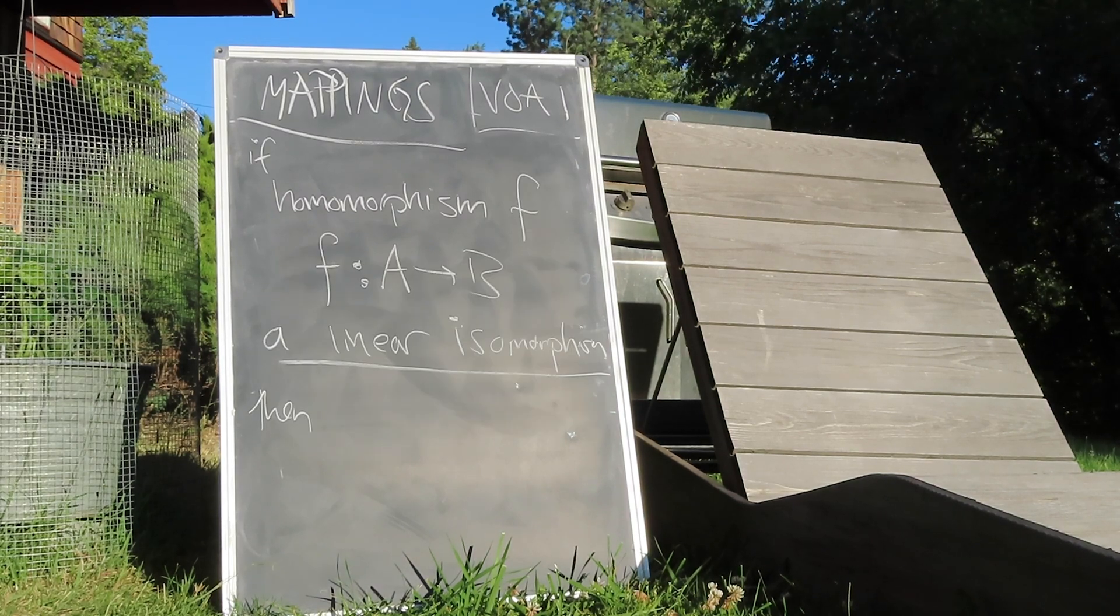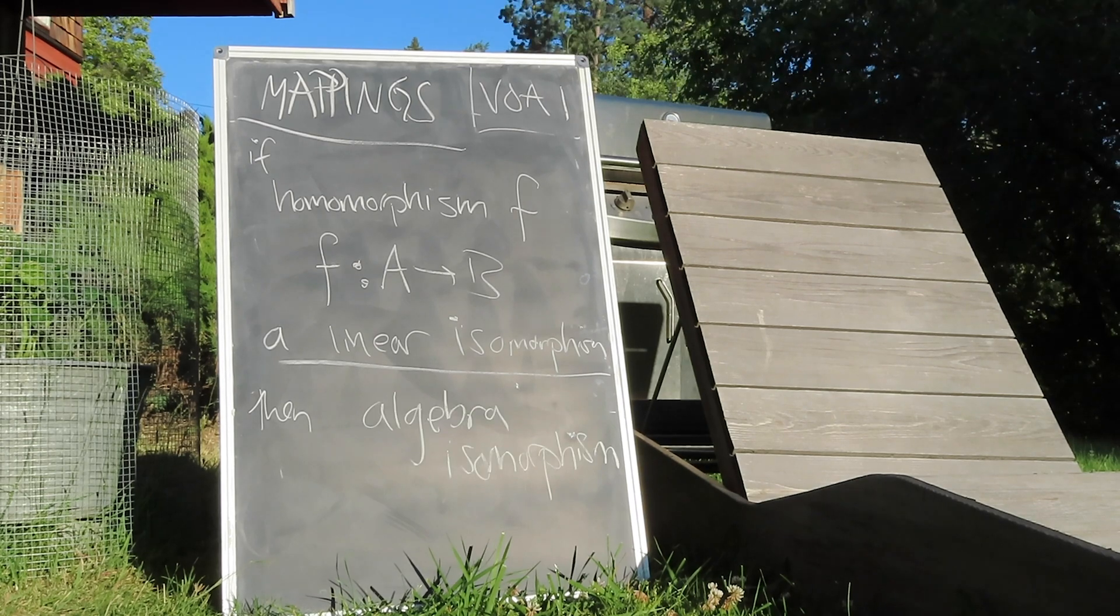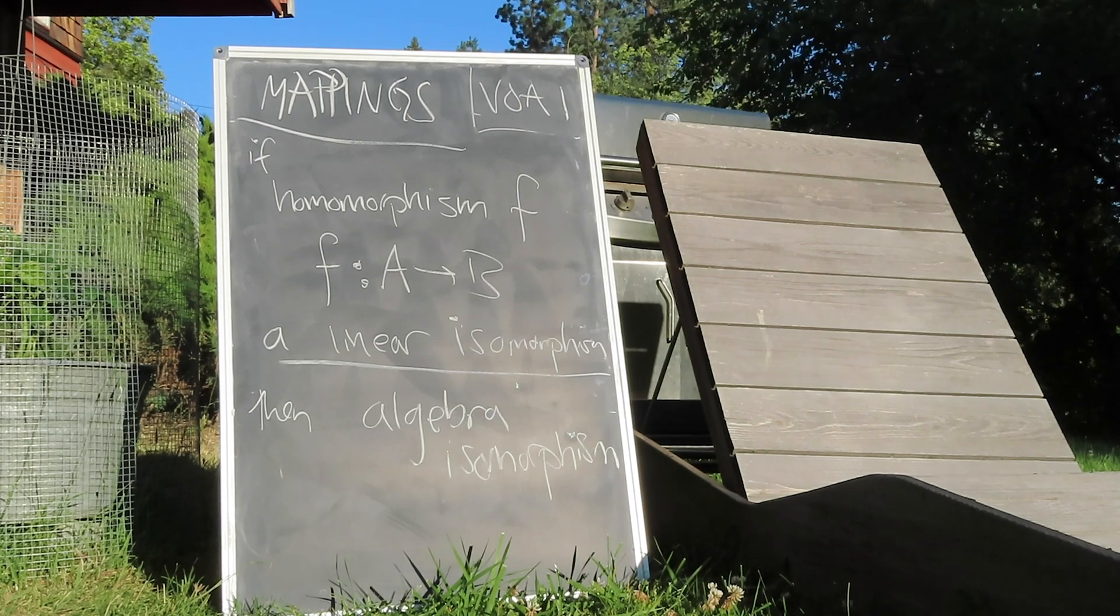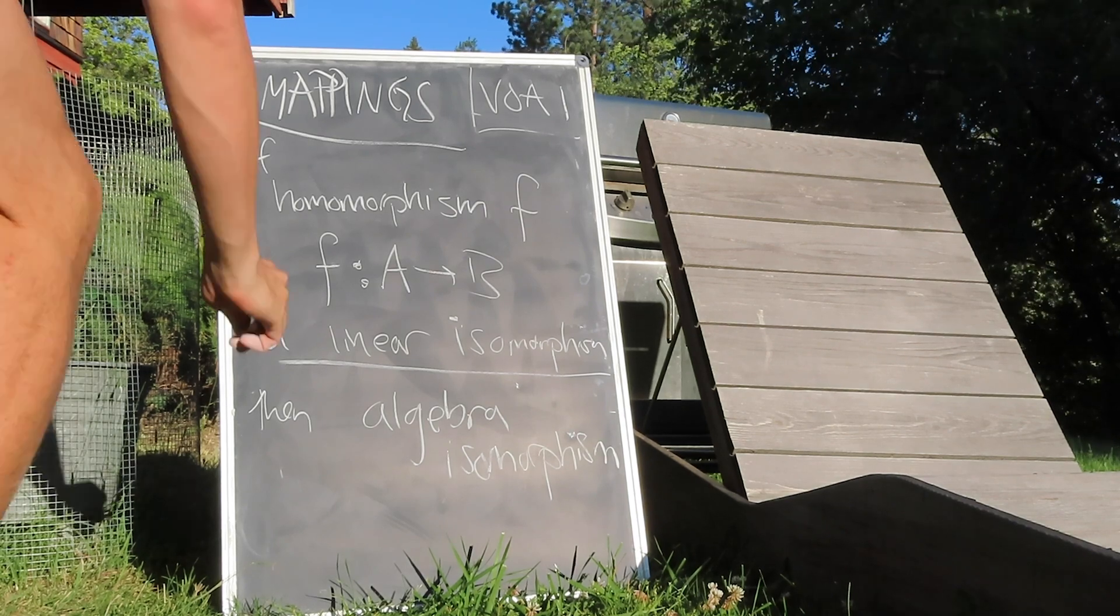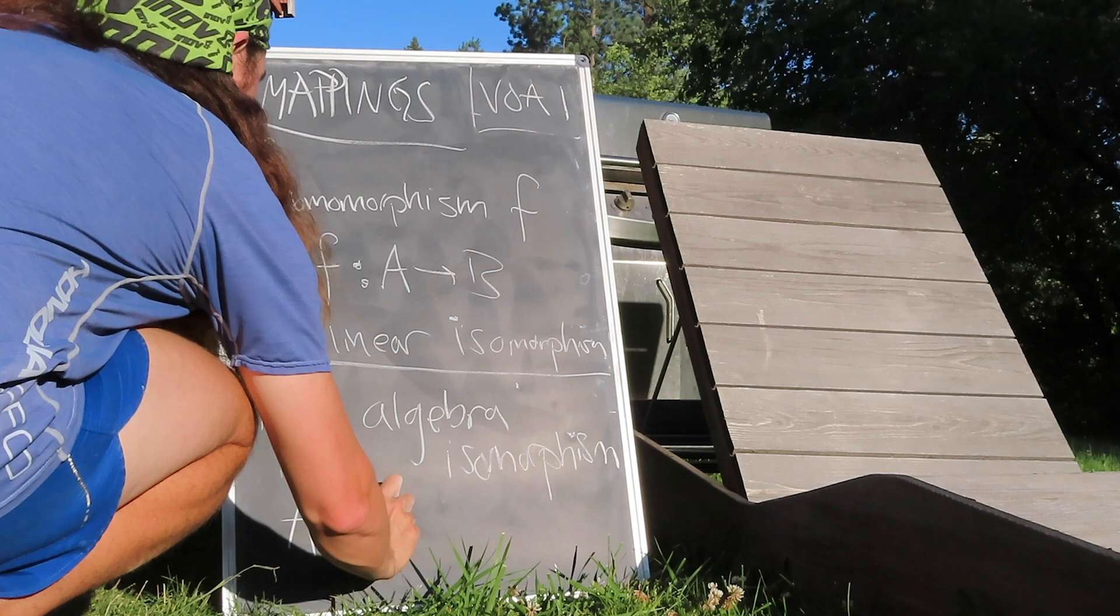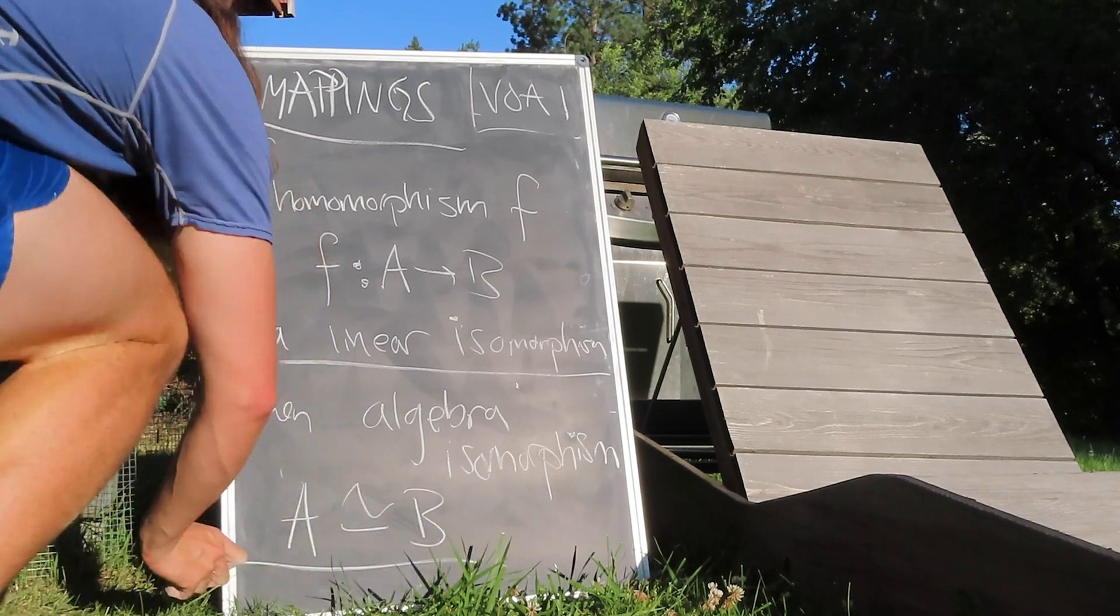An algebra homomorphism that is also a linear isomorphism is called an algebra isomorphism. It preserves all the relevant structure, and if one exists between two algebras, they are effectively the same. To acknowledge that, we call such algebras isomorphic.